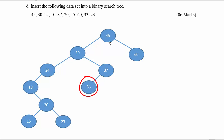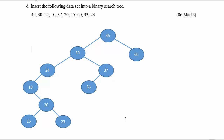The last number is 23 — 23 is less than 45 (left), less than 30 (left), less than 24 (left), greater than 10 (right), and you meet 20. Since 23 is greater than 20, it goes to the right-hand side of 20. This is the binary search tree you get at the end.